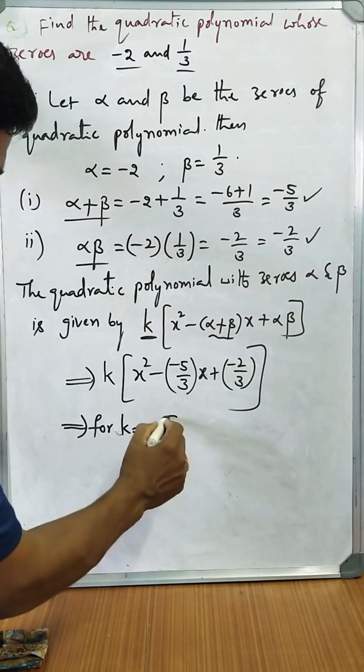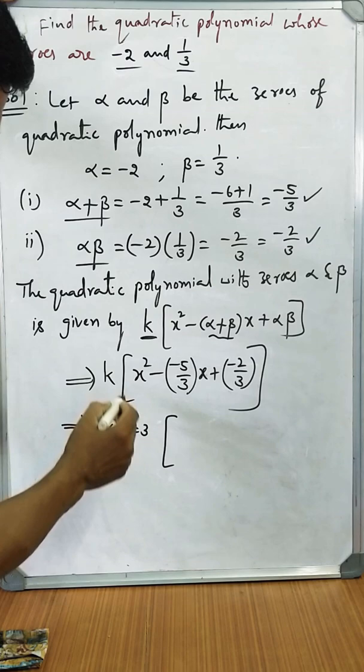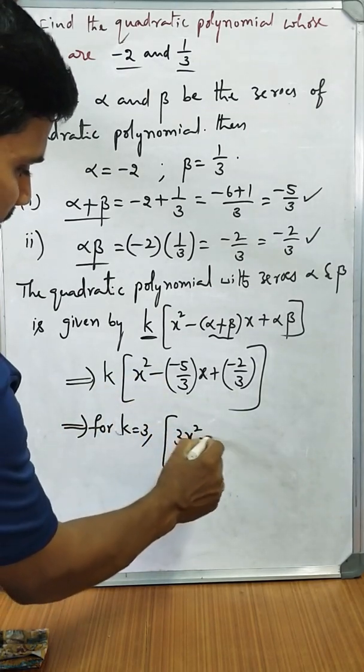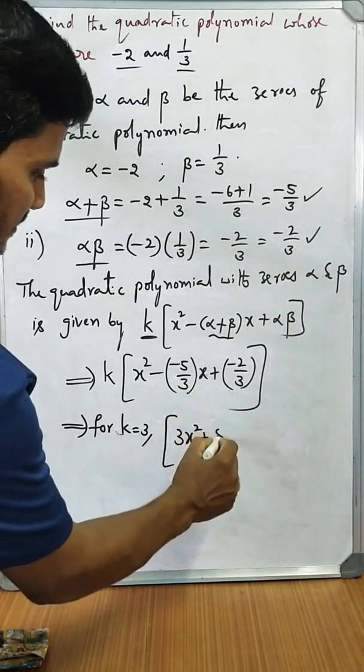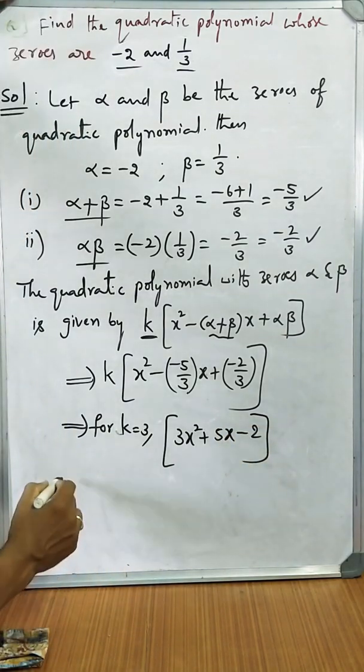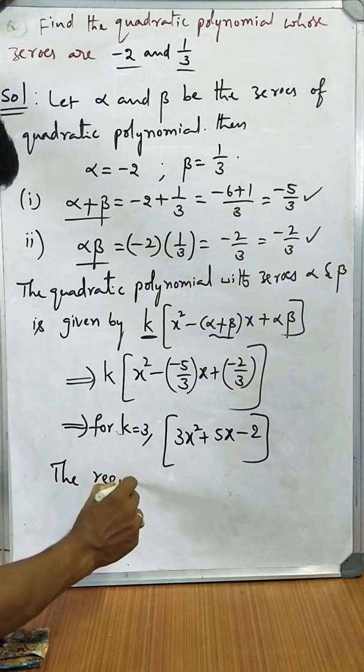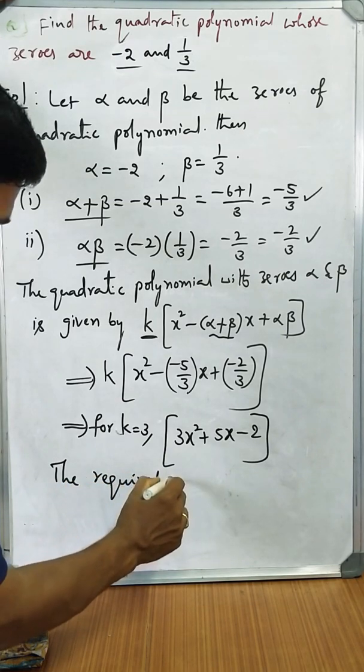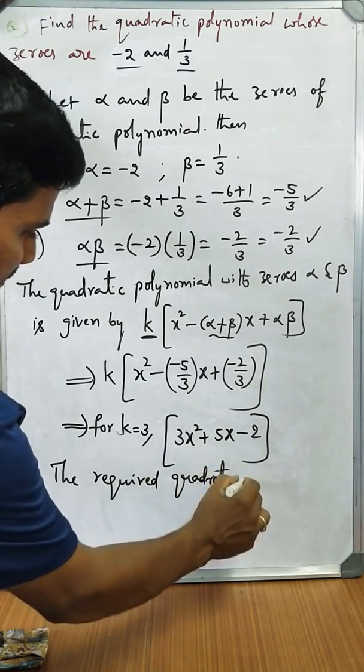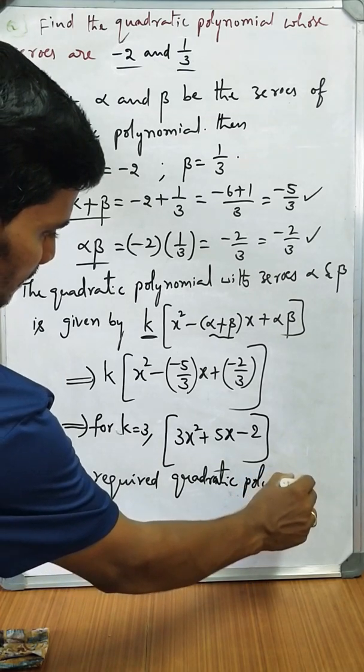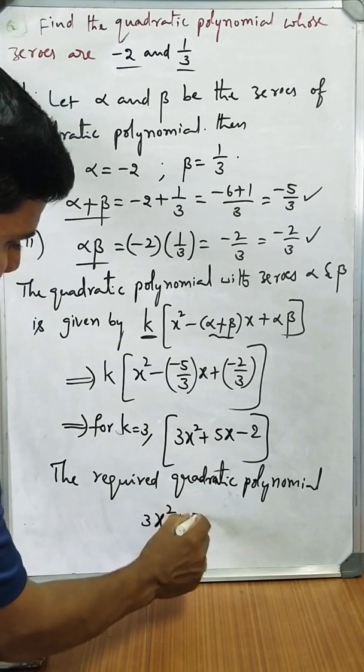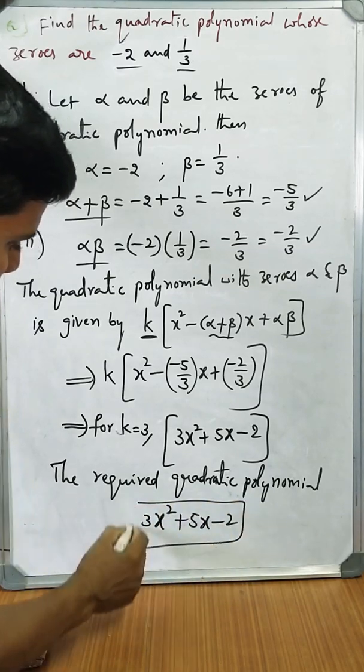3 into x square is 3x², minus 3 into -5/3 cancels to plus 5x, and minus into minus 2 gives minus 2. So the required quadratic polynomial is 3x² + 5x - 2.